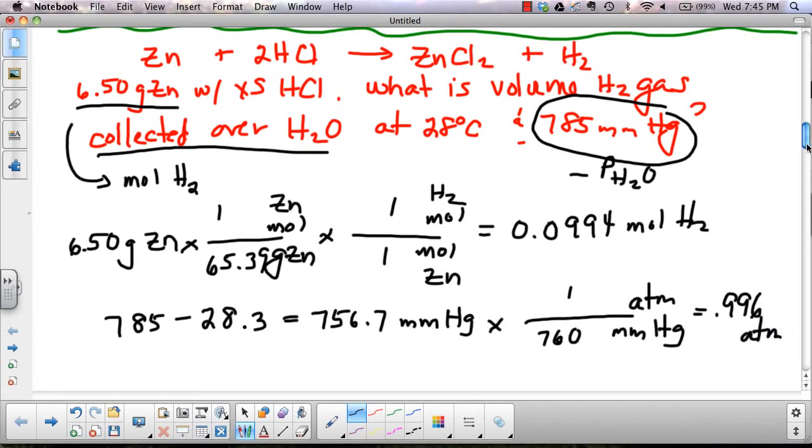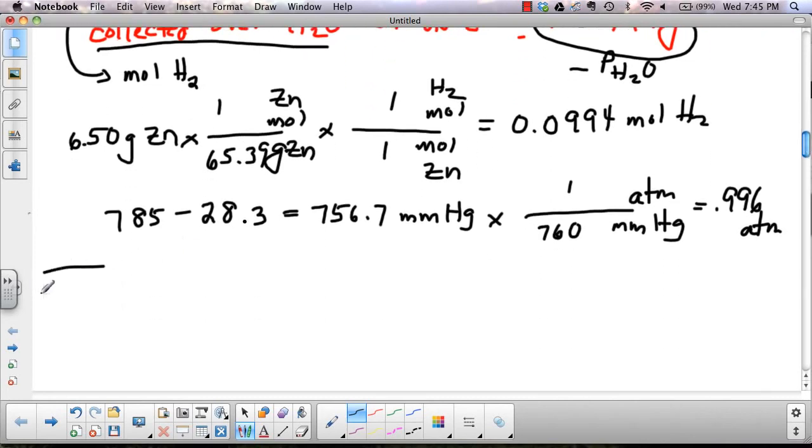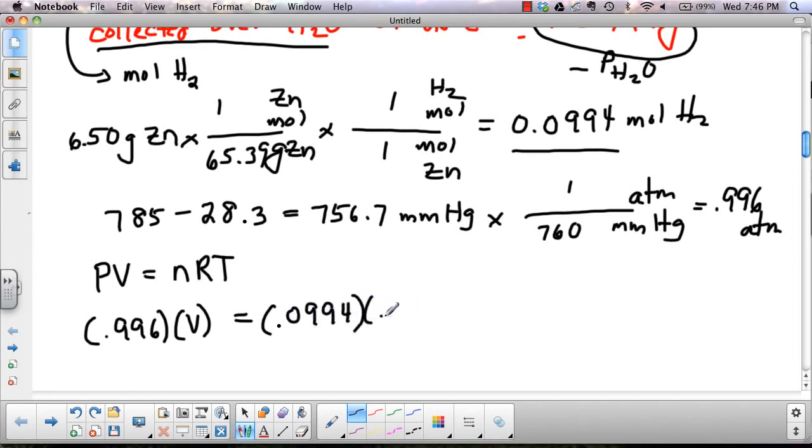So now we're going to plug into our ideal gas law. So PV equals nRT. Our pressure is 0.996 ATM. We're looking for the volume. Our moles is 0.994. 0.0821 and our temperature was 28, and 28 plus 273 is 301. So if we do all of that out we get a volume of 2.47 liters. And those are the kinds of problems that you might see doing gaseous stoichiometry.